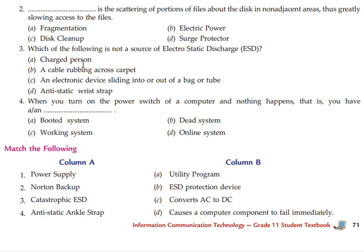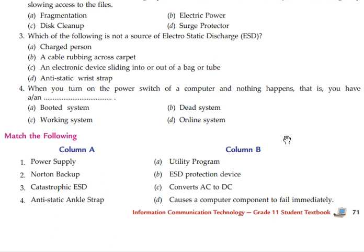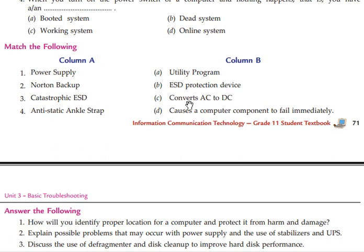Third question: which of the following is not a source of electrostatic discharge? A charged person — yes. A kid rubbing across the carpet — yes. An electronic device sliding into or out of a pack or tube — yes. An antistatic wrist strap — this is not a source of ESD; in other words, it is a preventing method. When you turn on the power switch and nothing happens, it is a dead system. Matching: power supply converts AC to DC; Norton backup is a utility program; catastrophic ESD causes a computer component to fail immediately; an antistatic ankle strap is an ESD protection device.